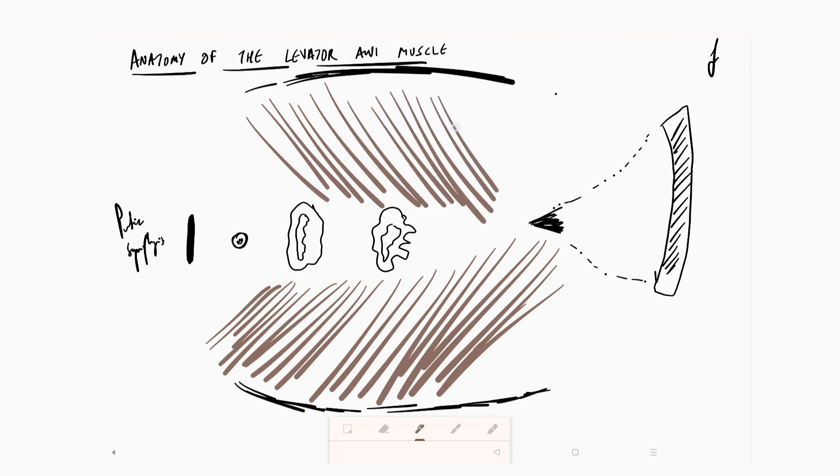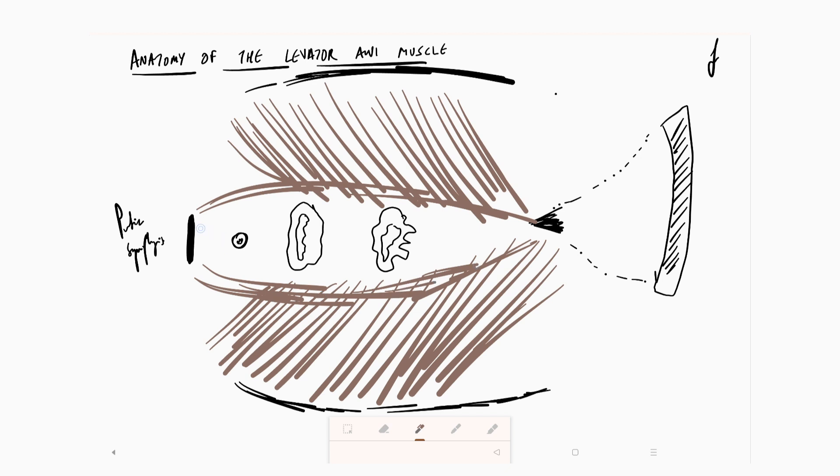Now we can broadly divide this into further components from here, because a large component of this muscle originates from the pubic symphysis and takes its dip towards the coccyx. But in its journey going backwards,